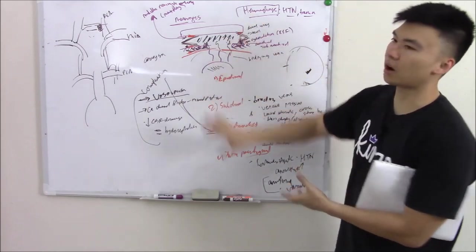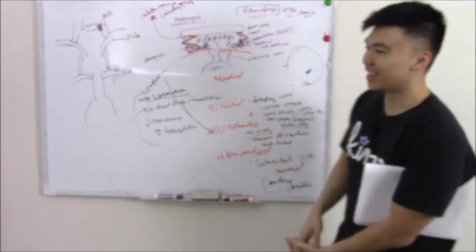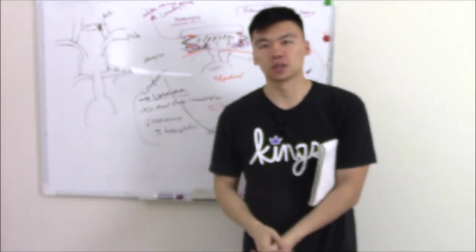So that does it for what can go wrong in the blood supply of your cortex. I'm just looking at this, this is like a huge mess, but then hopefully that just clears some things up. Hope you enjoyed the video. Thanks.